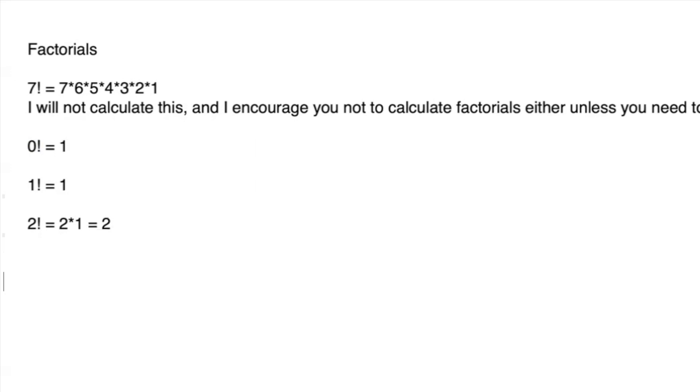When you are working with factorials, these are going to come up in things such as permutations and combinations. We might end up with expressions that look like this. We might have 5 factorial times 3 factorial over 8 factorial. So we might have to calculate something like this.